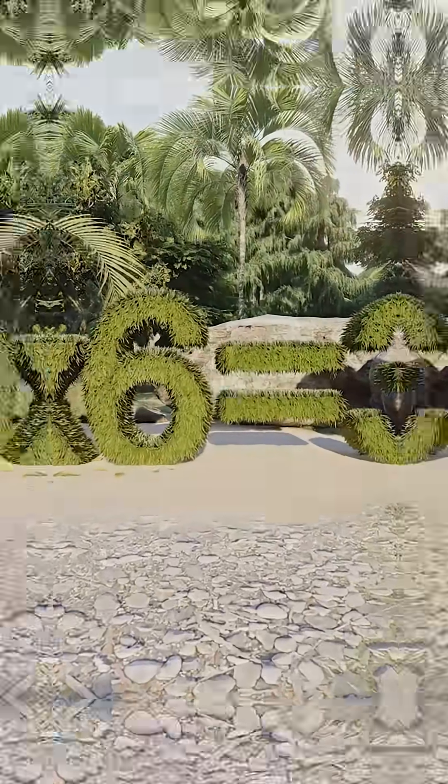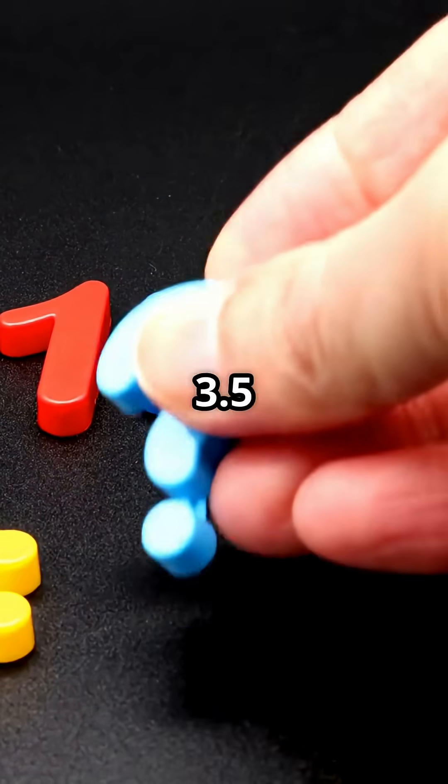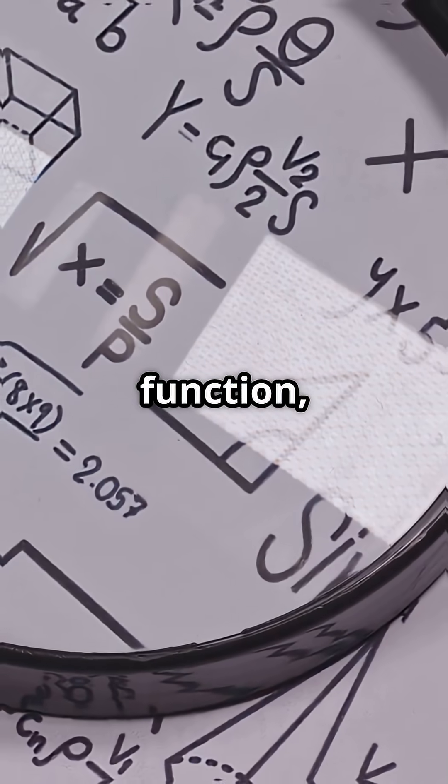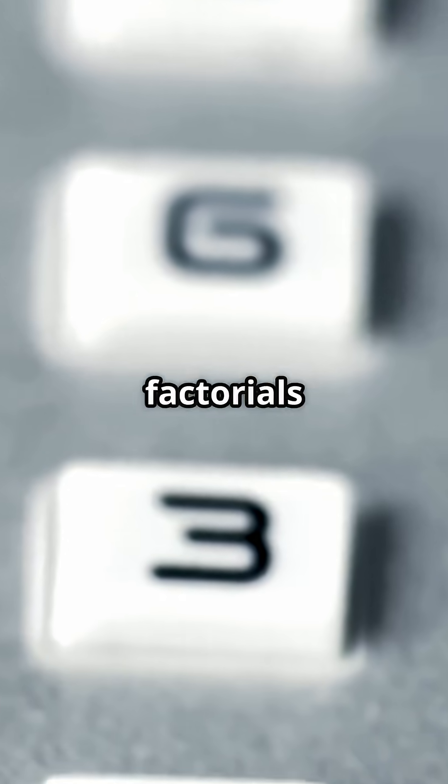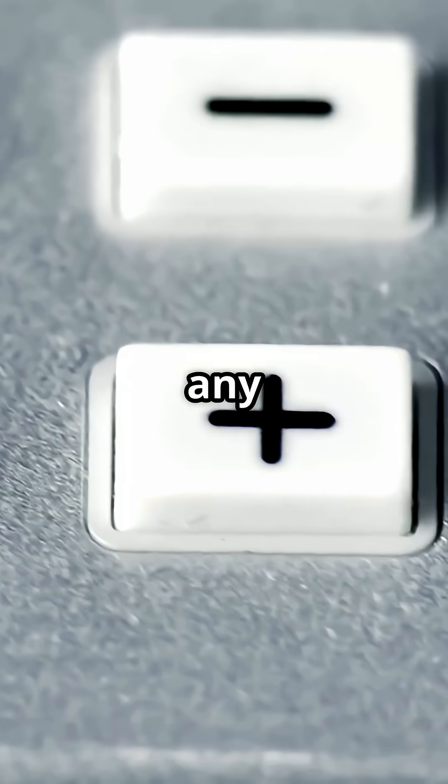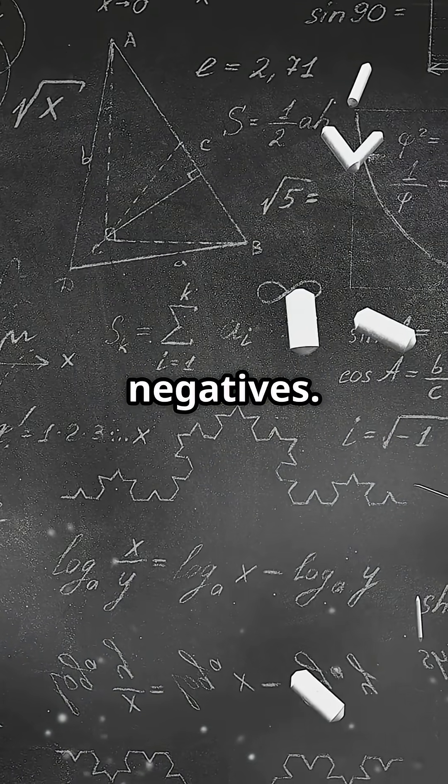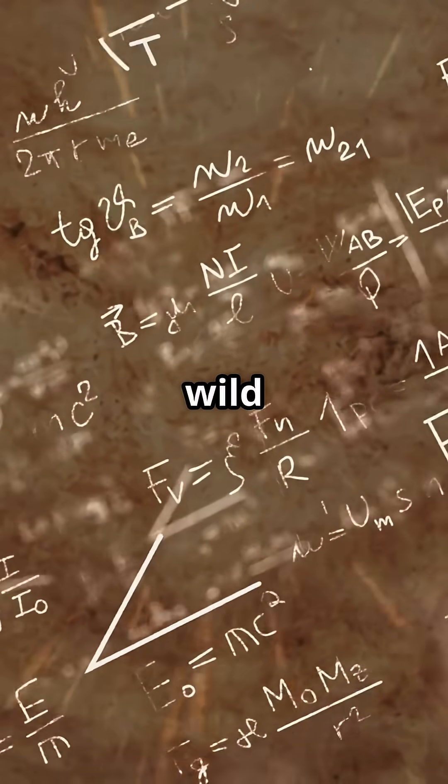× 2 × 1. But what about 3.5 factorial? Enter the gamma function, a tool that lets us calculate factorials for any number, even fractions or negatives. But here's where it gets wild: the gamma function isn't just an extension.